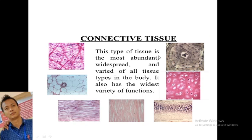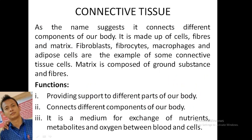Connective tissue is the most abundant and widespread of all tissues in the body and can perform a wide variety of functions. Connective tissue has different components in our body — it is made up of cells and fibers. Fibroblasts, fibrocytes, macrophages, and adipose tissue are examples. The matrix is composed of ground substance and fibrous components providing support to different parts of the body and connecting different components.